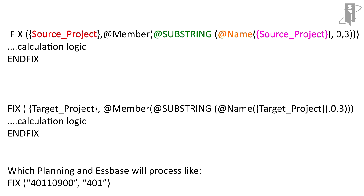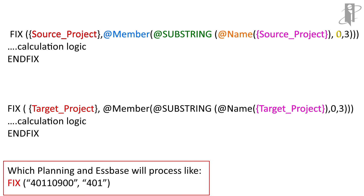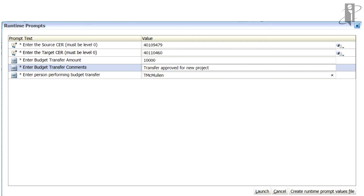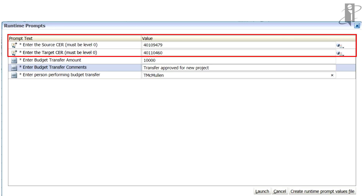My start position is zero, and I want to return the first three characters. Once I've got the substring, I actually use the @Member function to pull that back into a member format so that it can be used within the fix statement. I have another fix statement where, if I have a source project and a target project for my business rule, I use that same substring function. So if my project number is 40110900, then the entity number is 401. What that looks like for end users when they run the business rules is now I only have two prompts instead of four — I didn't have to prompt them for a facility or for an entity. I've got my source project and my target project. That's a simple case of the @Substring function.